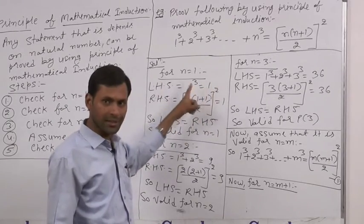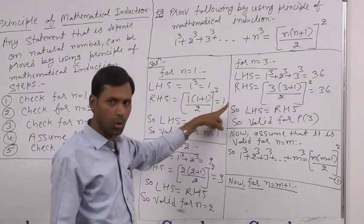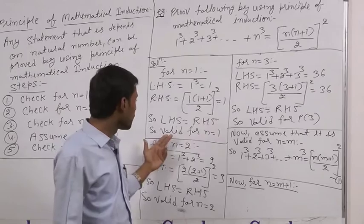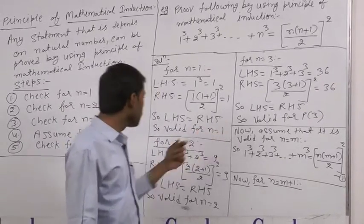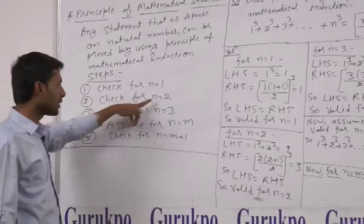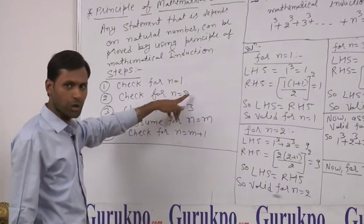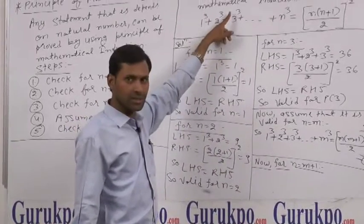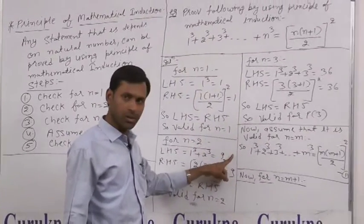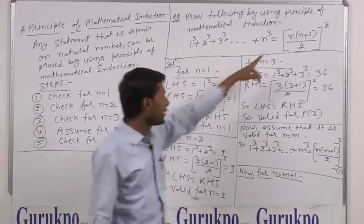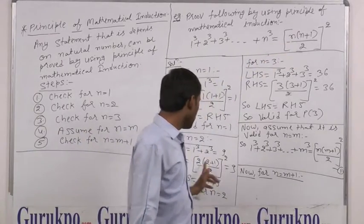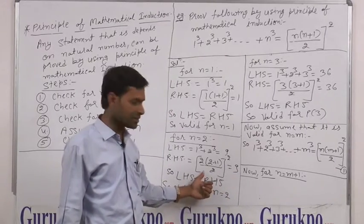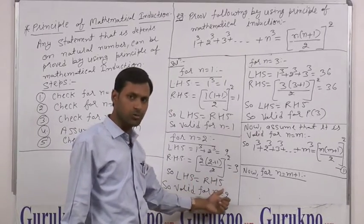LHS is equal to 1 and RHS is also equal to 1, so LHS is equal to RHS. So it is valid for n equal to 1. Now we move on to step number 2, that is for n equal to 2. For n equal to 2, LHS: 1 cube plus 2 cube is equal to 9. And RHS: 2 times (2+1)/2 whole square is equal to 9. So LHS is equal to RHS, so it is valid for n equal to 2.